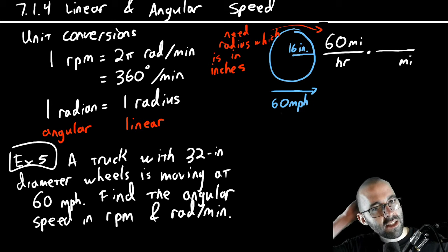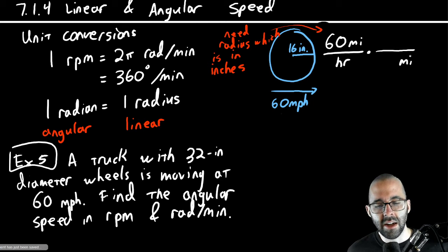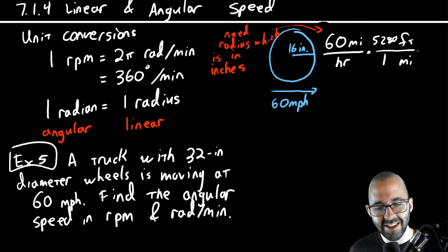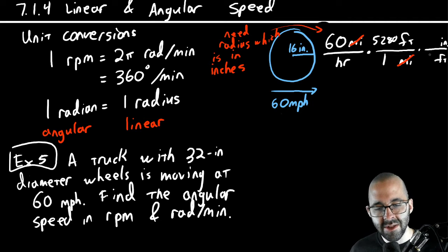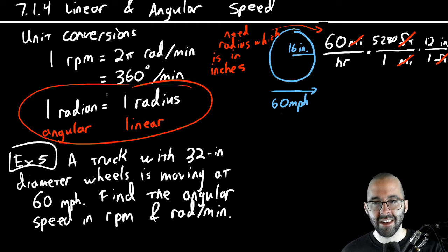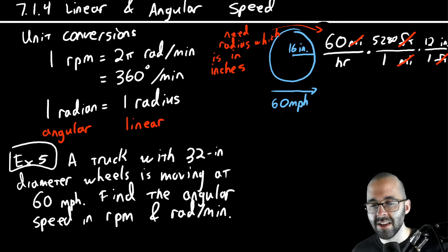To convert to angular we need to get this in terms of inches. We want miles to cancel, so put miles on the bottom. One mile equals 5280 feet — that gets us closer. Then we still need inches, so we multiply again with feet on the bottom: one foot equals 12 inches. Now the miles and feet have both canceled, and we have everything in terms of inches, which matches our radius.